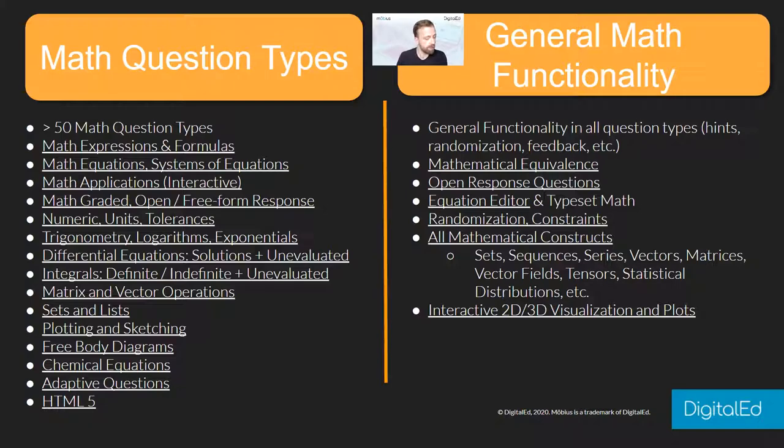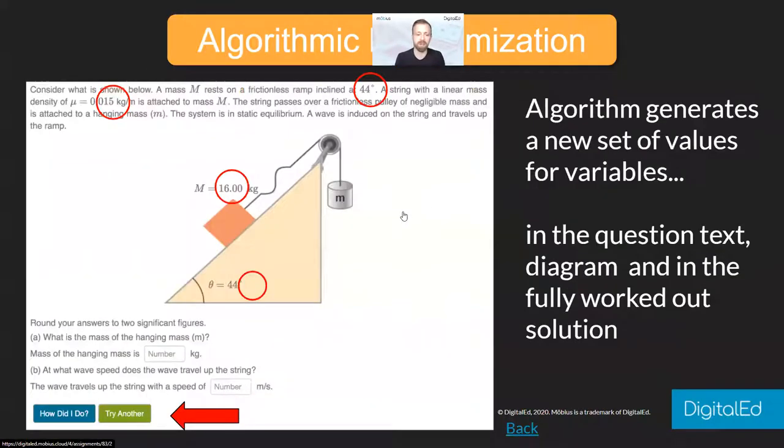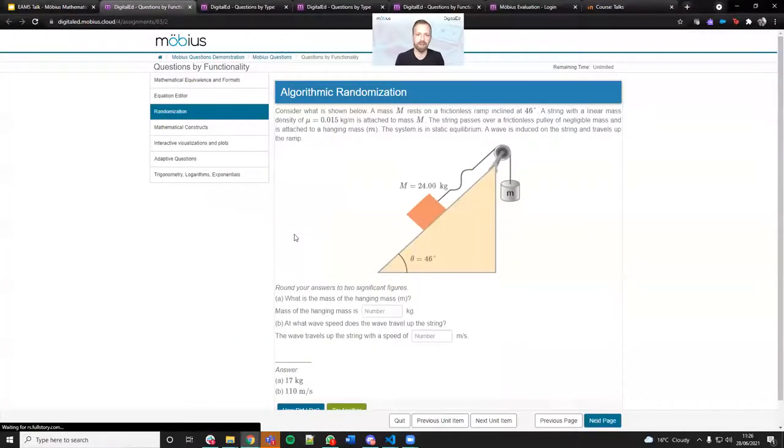The first one I really wanted to talk about was this idea of randomization. This is really important in Mobius and the value which our customers get out of it. With randomization you can make one question with parameters that are regenerated each time the question is run.